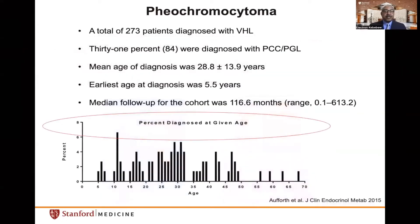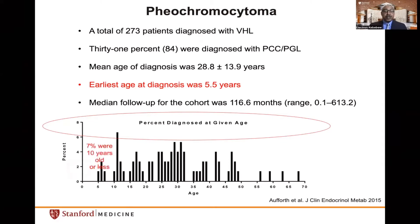When should we start screening? In a study of 273 patients diagnosed with VHL, 31% had a diagnosis of pheochromocytoma and paraganglioma, including one head and neck paraganglioma and two abdominal paragangliomas. The mean age of diagnosis was younger, typical in inherited disease, and the earliest onset was in a boy of five and a half years. We found that 7% of patients were diagnosed before age 10, emphasizing that screening should start at five years of age and be done annually.